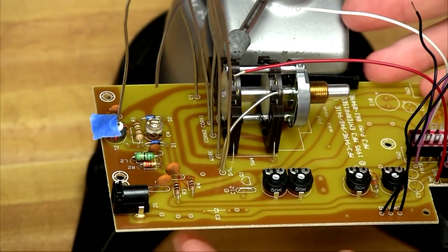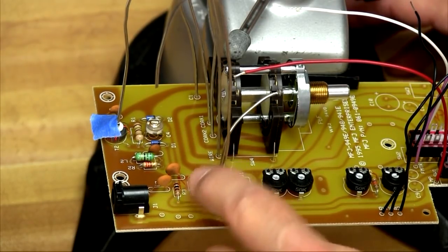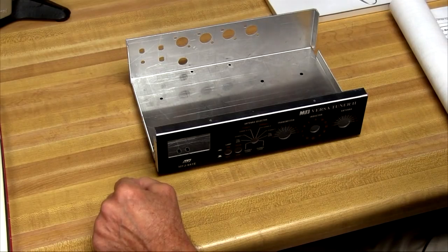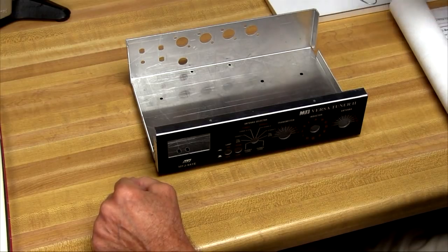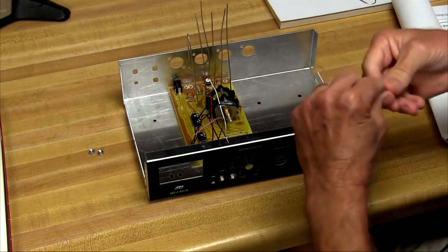Now this completes the PC board part of the kit here. There are some positions here that aren't used because this same PC board is used in a number of different model tuners. Now our next step here is to mount the printed circuit board inside of the chassis. It'll go like this.